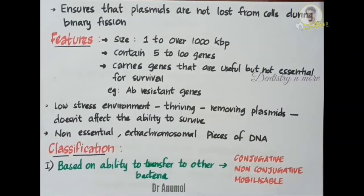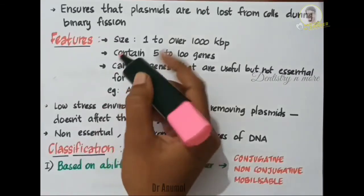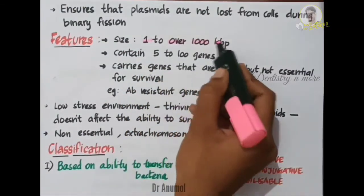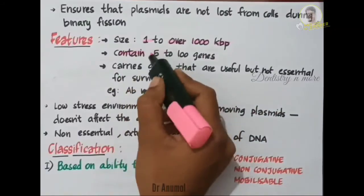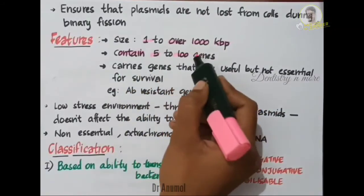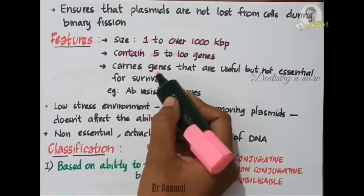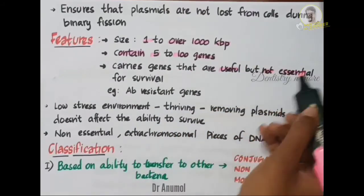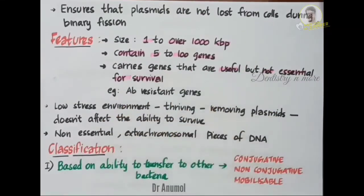What are the features of bacterial plasmids? Their size varies from 1 to over 1000 kbp and they contain 5 to 100 genes. They carry genes that are useful but not essential for survival — bacteria can survive without plasmids, but plasmids contain many useful factors.